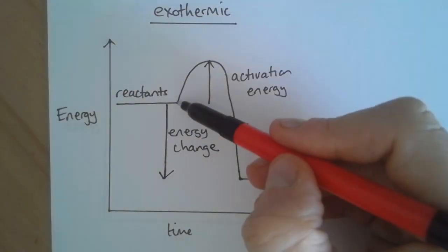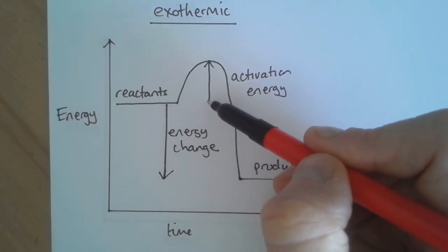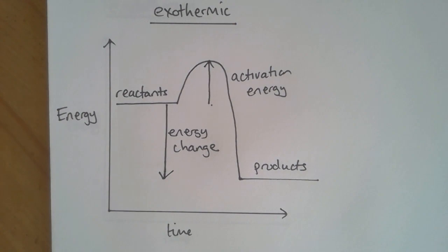Again, it's really important that these arrows are drawn exactly as you see here. The bottom of this is in line with the reactants and goes to the top of the peak. And this starts on the reactant line and goes down to be in line with the products.